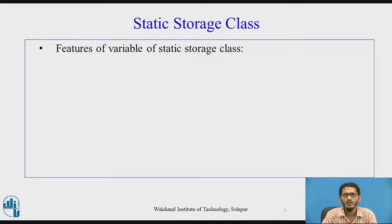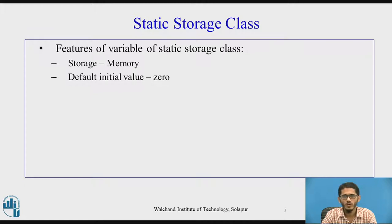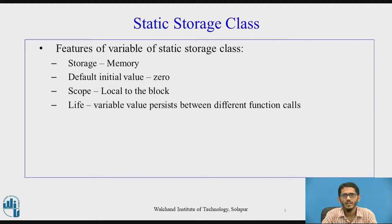Let us first see what are the features of a variable declared with the static storage class. The storage is memory, meaning if a variable has been declared to be of the static storage class it will get placed in memory. The default initial value for the variable will be zero. The scope will be local to the block in which the variable has been defined. And finally, the life: the value of the variable will persist between different function calls, meaning if a particular function has been called more than once and the variable is declared to be static, that value will be saved and can be used between different function calls.